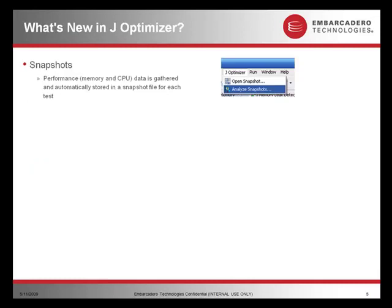So what's new in J-Optimizer that might be of importance to you? Well, the concept of snapshots. Whether it's memory or CPU profiling you're generating data from, you can gather and automatically store that up in a snapshot file so you can actually analyze it later on.